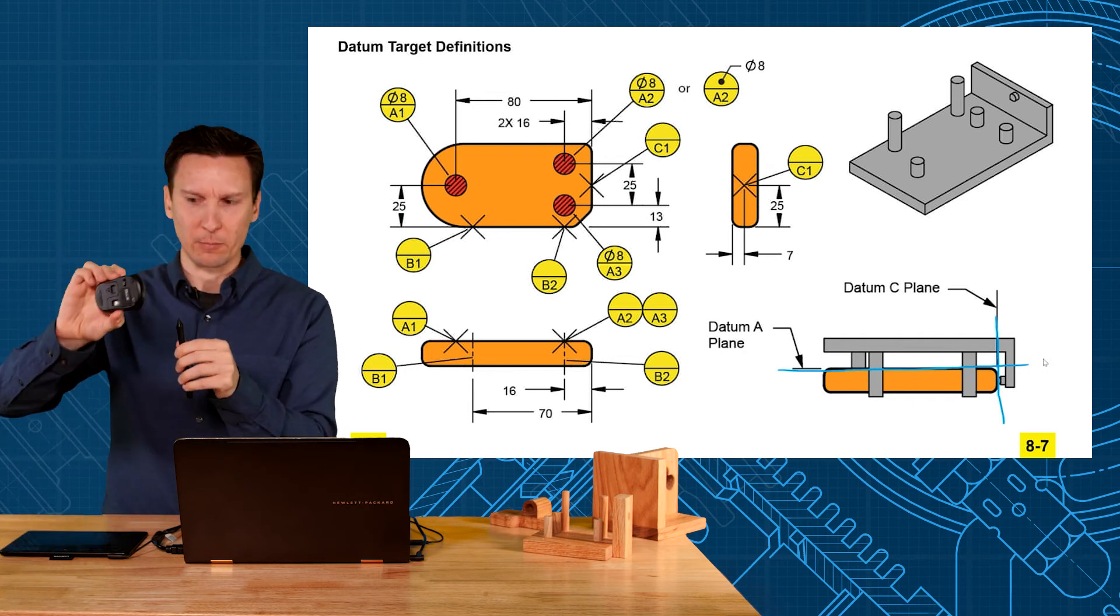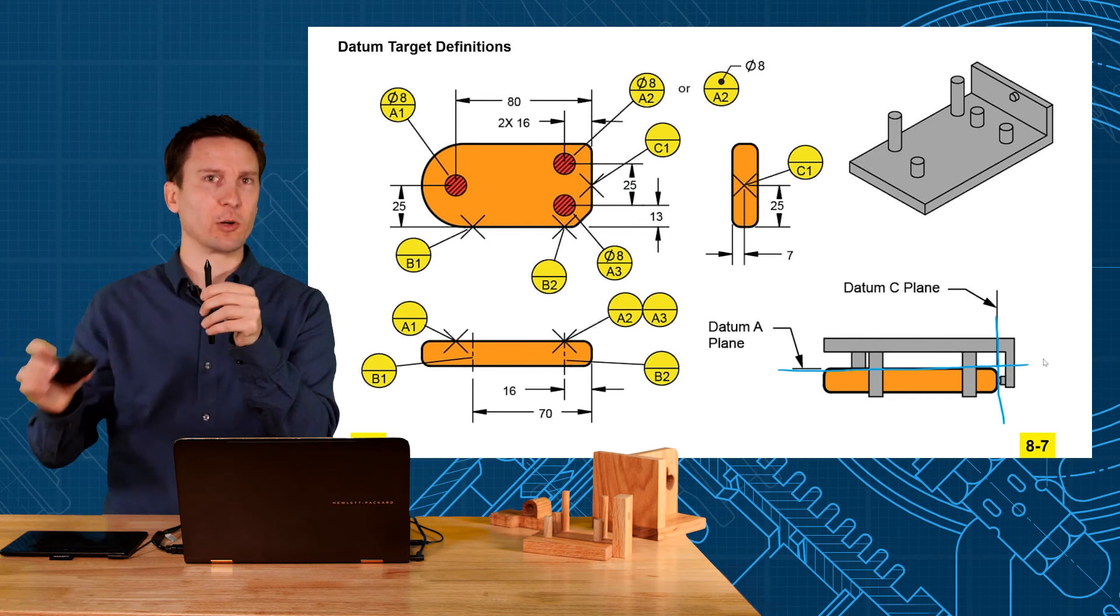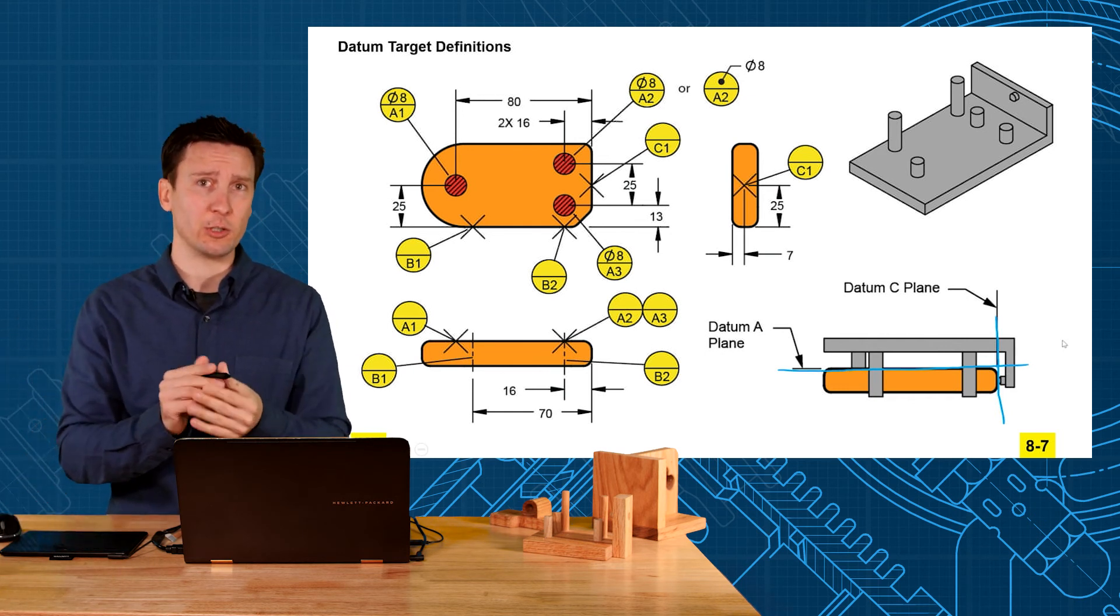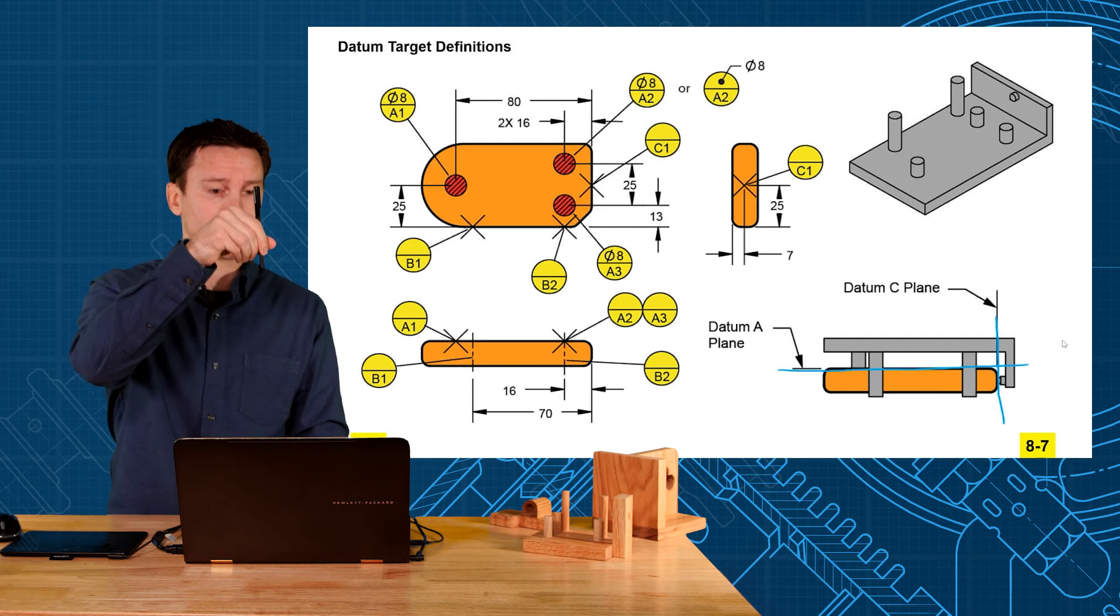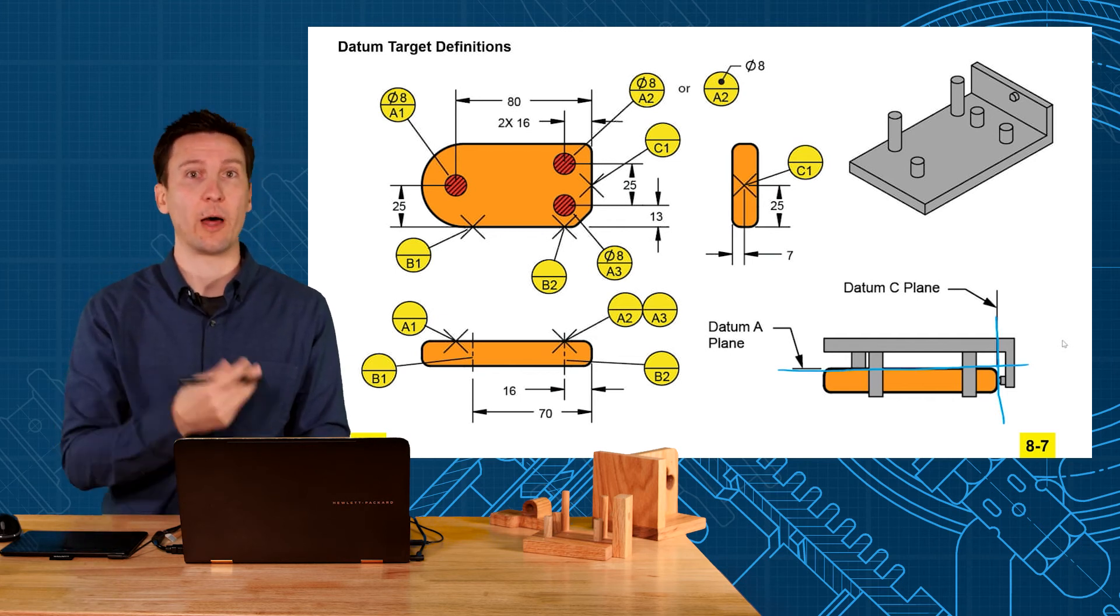But if you have a smaller plastic part like my mouse, maybe just a little point contact would be the best. A coordinate measuring machine usually uses point contact because the CMM can touch that single point a lot more repeatably.